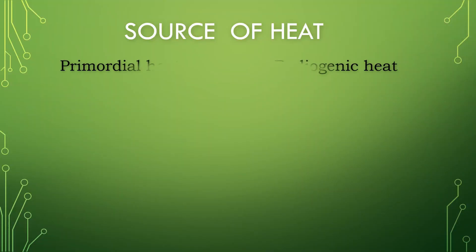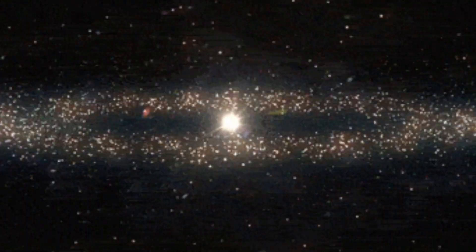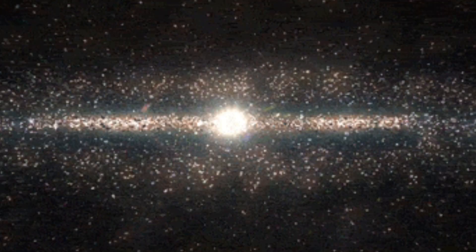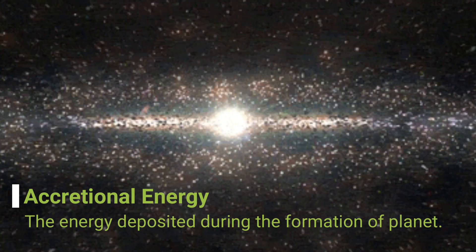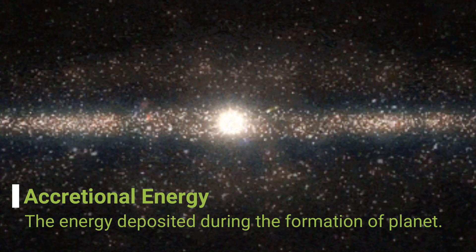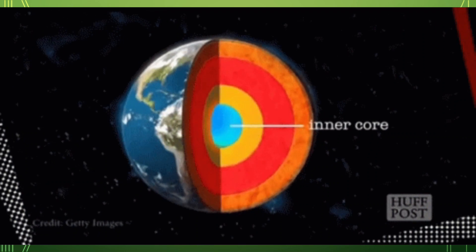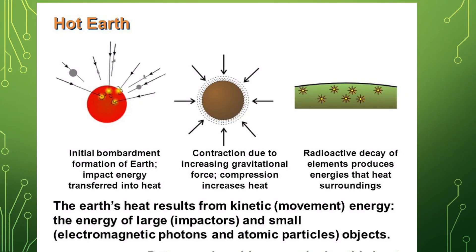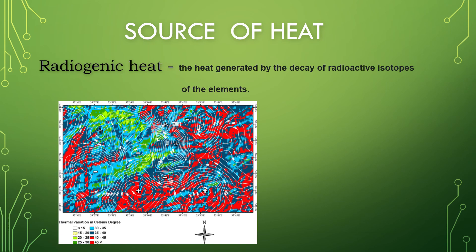Sources of heat in our planet can be identified as primordial and radiogenic heat. Primordial heat was generated during initial formation of Earth. The major contribution of this internal heat is the accretional energy, the energy deposited during the early formation of a planet. The core is a storage of primordial heat that originates from times of accretion when kinetic energy of colliding particles was transformed into thermal energy.